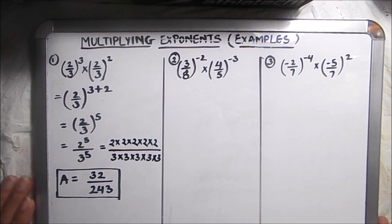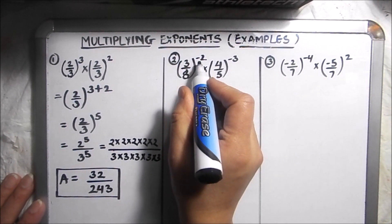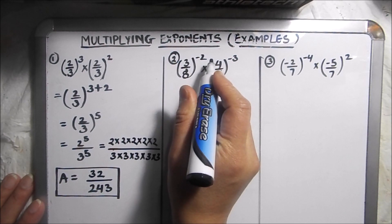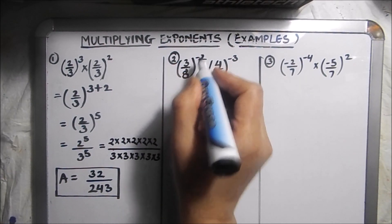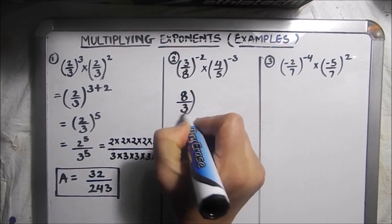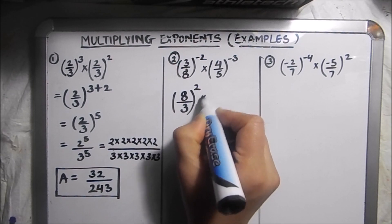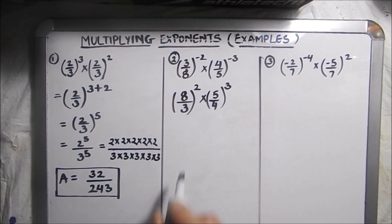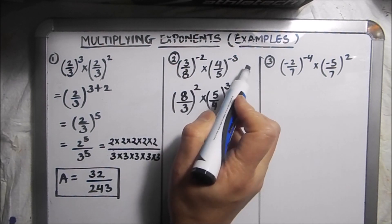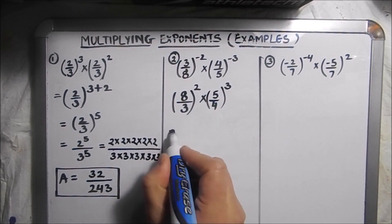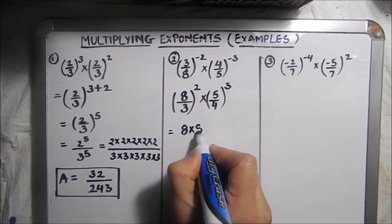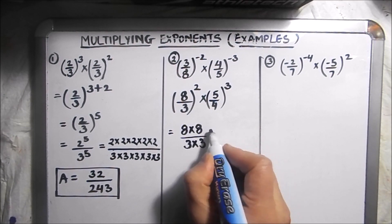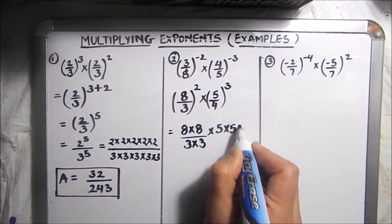Now let's move to the next example, which is 3 over 8 to the power minus 2 times 4 over 5 to the power minus 3. Here we take the inverse of the number to make the power positive. So 3 over 8 to the power minus 2 becomes 8 over 3 to the power 2, and 4 over 5 becomes 5 over 4 to the power 3.